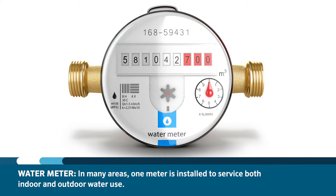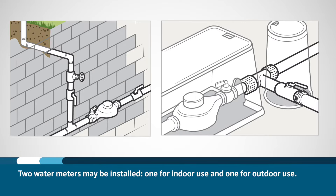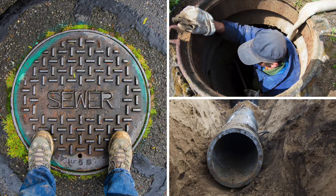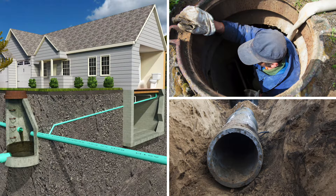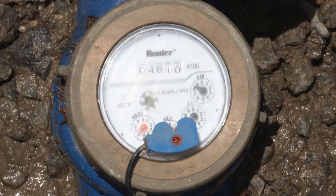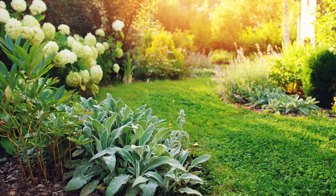In many areas, one water meter is installed to service both indoor and outdoor water use. Other areas may require installation of two water meters: one for indoor use and one for outdoor use. One advantage to having a dedicated irrigation meter is to eliminate costly sewer fees commonly incurred with indoor water use meters, because water that enters the home is assumed to leave through the sewer system, while water used by the outdoor irrigation system is assumed to stay in the landscape. Another advantage is that it allows measurement and therefore better management of landscape water, maximizing efficiency and helping to ensure a beautiful and healthy landscape.